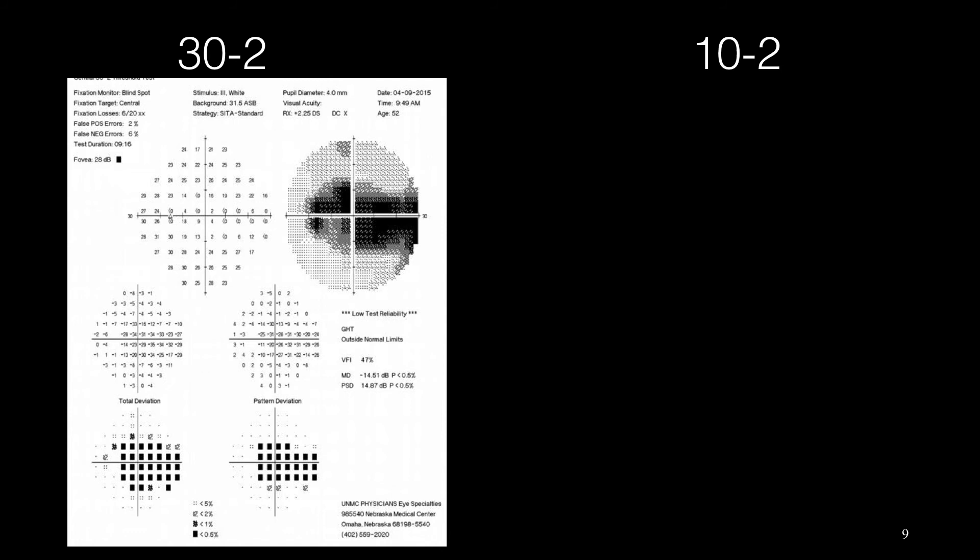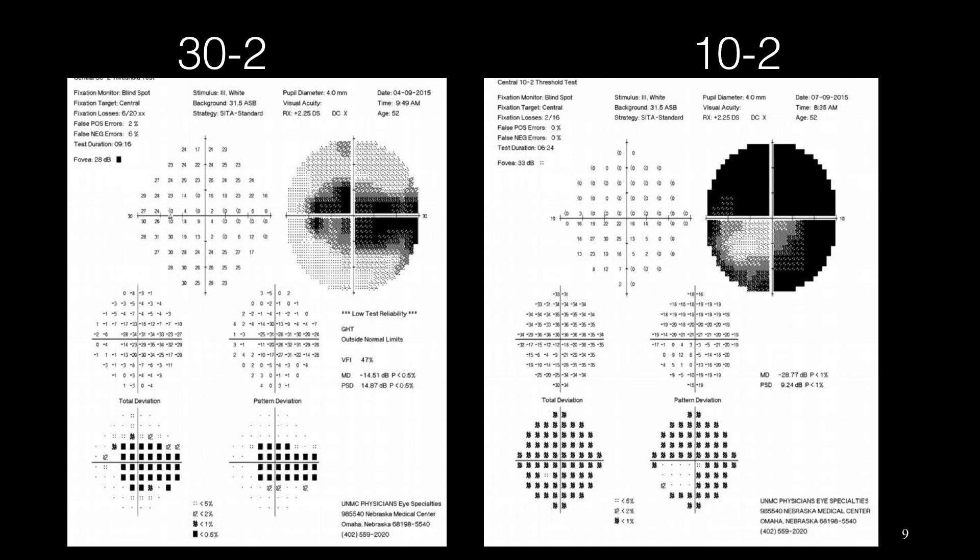This is an example of a patient with central scotoma. As you can see, there is no point with threshold value at the central part. But if we check 10-2, because we are checking more points, there's greater chance we can find some points with threshold value, which could be really helpful for follow-up and checking the progression of the disease.